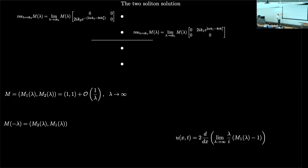In the lower half plane, the residue of M2 is connected to the value of M1. Can you find M1 and M2 in explicit form? If you can, you look at the behavior at infinity of M1 — take the first 1/λ term — and that is a function of X and T only, because the residue conditions have X and T in them. That function of X and T solves the modified KdV equation. It's a way to encode solutions: find these two meromorphic functions related in this way.